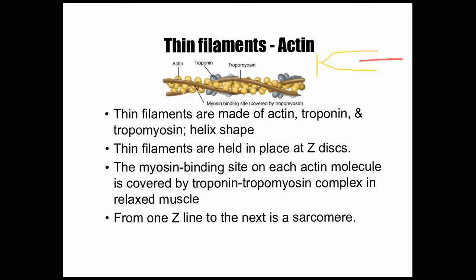Remember, sarcomeres are made of both thin and thick filaments. Thin filaments are made of actin — shown here in yellow. The thicker line in red is the thick filament made of myosin. The thin filaments or actin are made mostly of actin but also include proteins called troponin and tropomyosin. Myosin looks kind of like a golf club — it has little heads or cross-bridges that stick off of it. When allowed to, they will bind to the actin and pull it, which actually shortens the muscle.